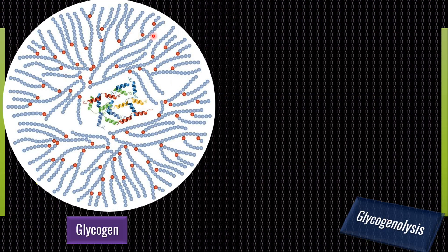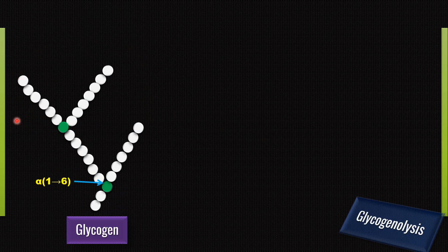We all know that glycogen is highly branched. We observe a branch every 6 to 7 glucose residues. All linkages are α-1,4 and the branching point is α-1,6. For the sake of explanation, I will not show the entire glycogen molecule — I will take a small portion of glycogen to explain the steps of glycogen breakdown. All linkages shown are α-1,4 glycosidic linkages, with α-1,6 at the branching points.